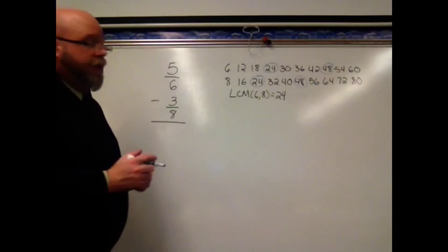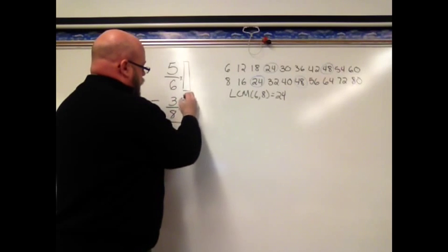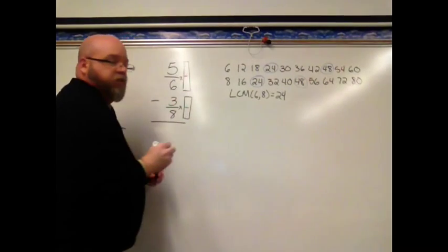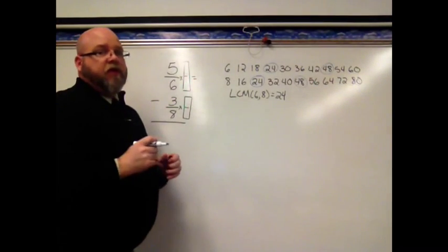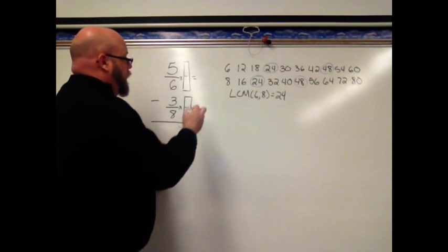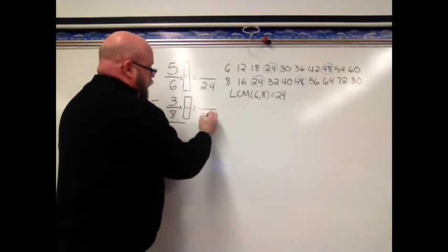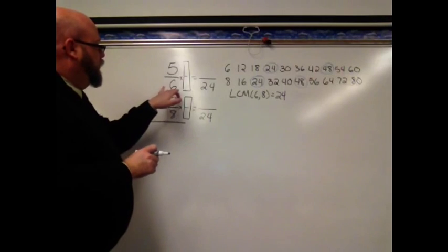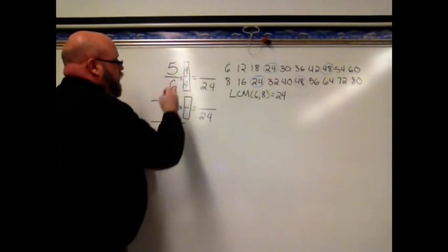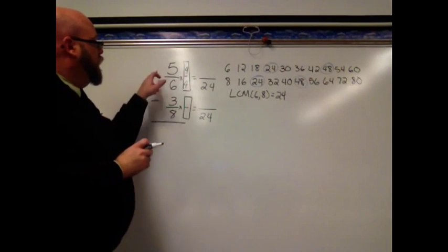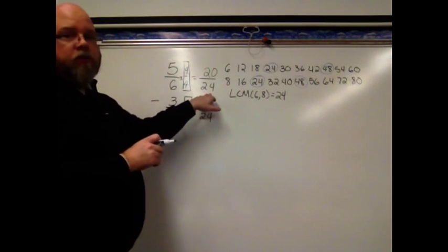So let's go ahead and do that. I know I'm going to multiply 5 sixths and 3 eighths times some fraction equal to 1, just to rename it. It doesn't change its value. It only changes its name when I multiply by 1 so that I have the common denominator of 24. 6 times what gives me 24? Well, 6 times 4 does. So my fraction equal to 1 is 4 fourths. 5 times 4 is 20. So 5 sixths gets renamed 20 24ths.